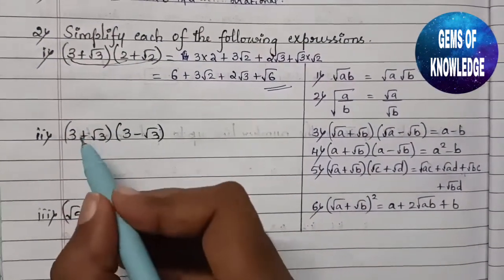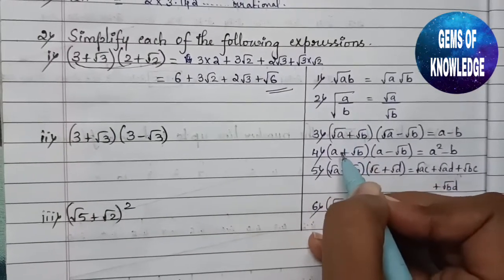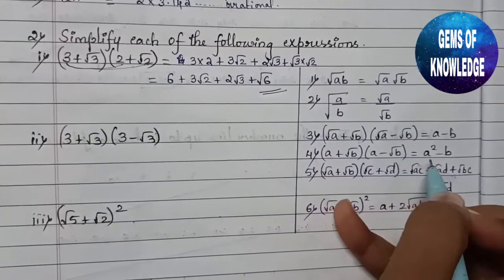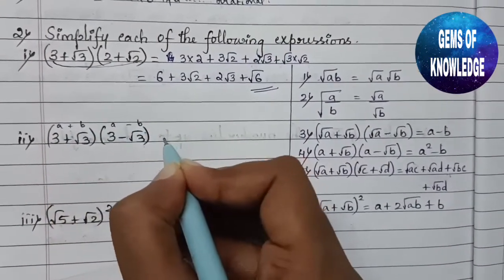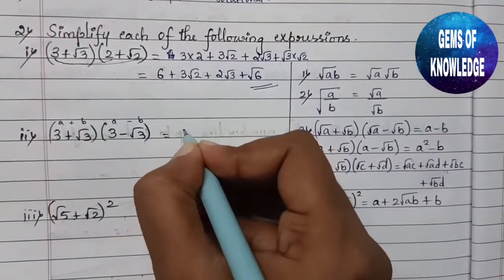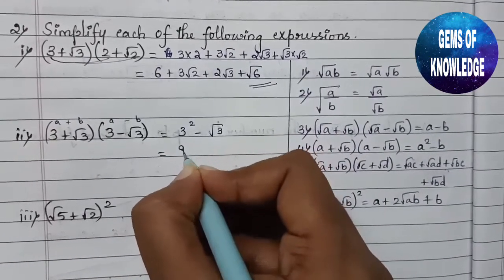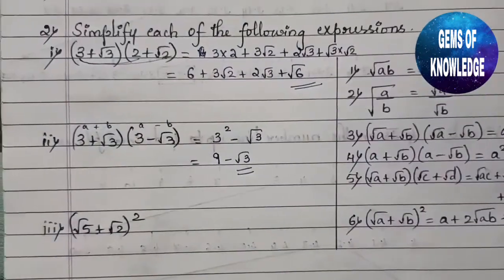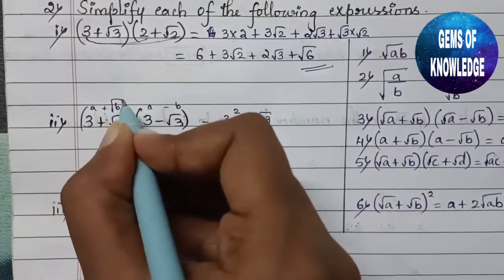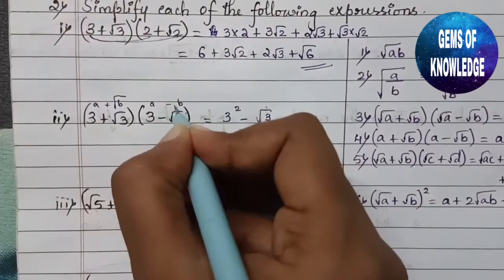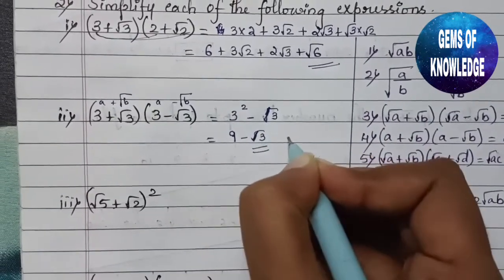The second expression is (3 + root 3)(3 - root 3), which is of the form (a + b)(a - b) = a² - b. Here a = 3 and b = 3 (not root 3, as per the formula). So the answer is 3² - 3 = 9 - 3 = 6.